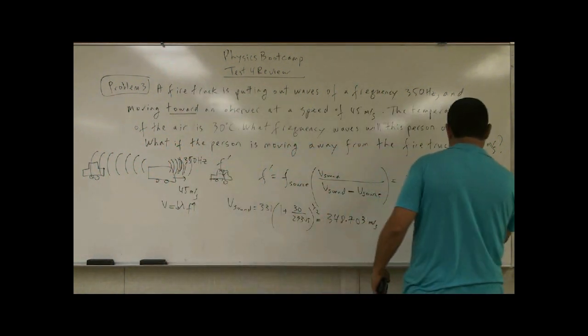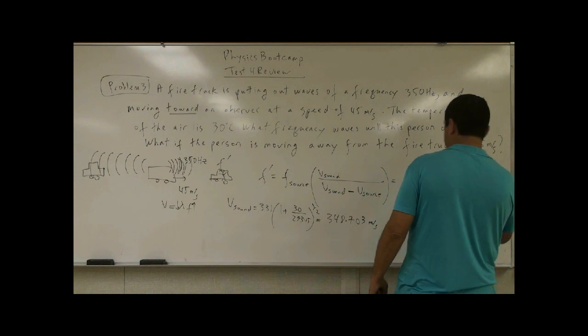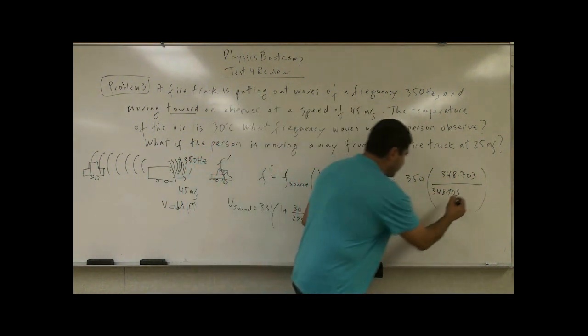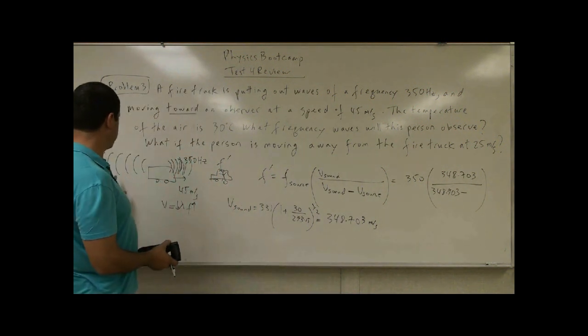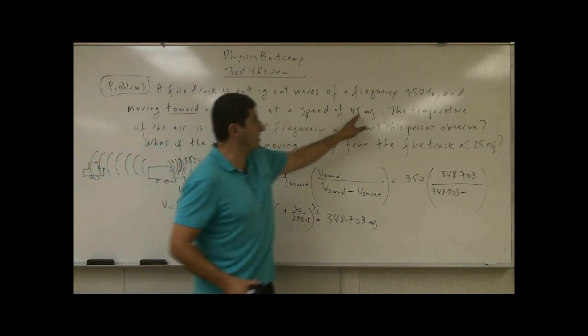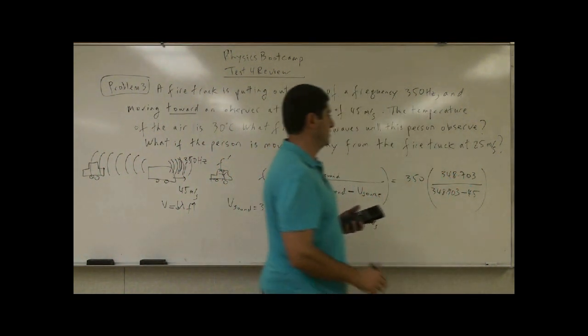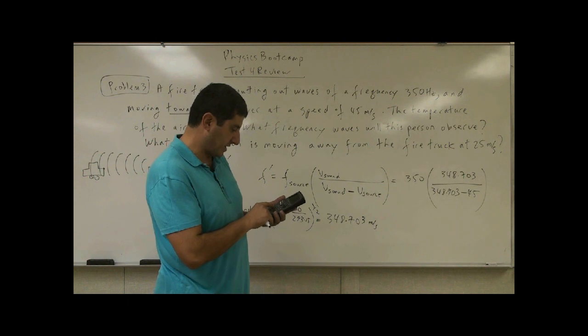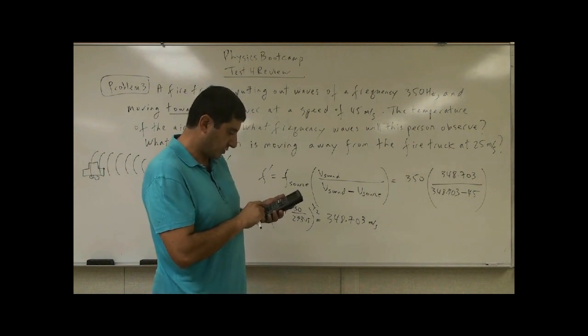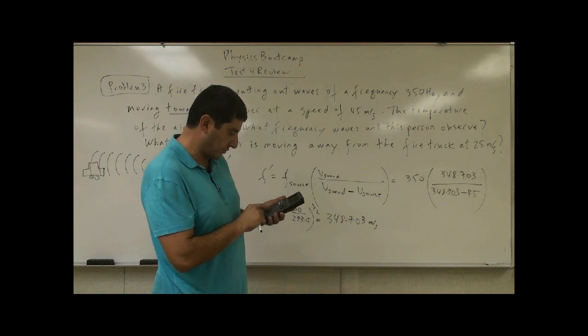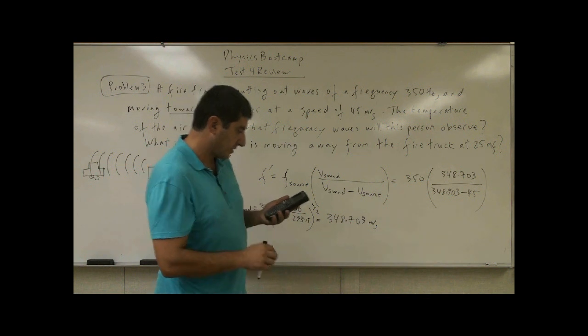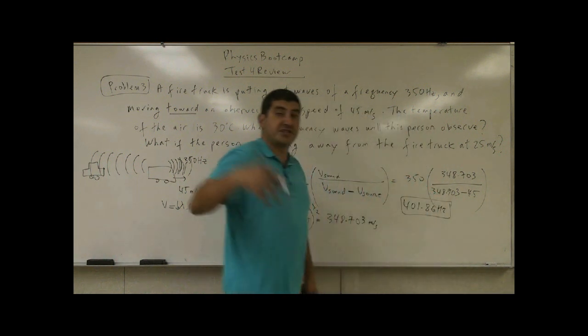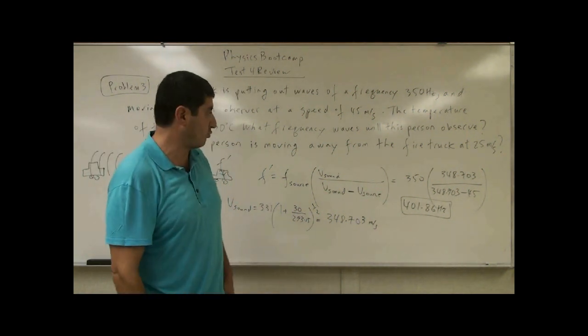We put it here and we put it here. So we've got to put it up there and up here. Now I've got to put minus the velocity of the source. What's the velocity of the source? It's coming towards you at 45 meters per second. So you would hear 348.703 divided by 348.703 minus 45 times 350. You would hear 401.86 hertz. So it would actually sound a different musical note. Quite different.